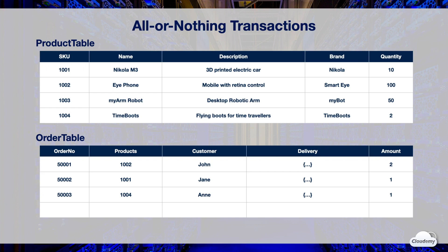An all-or-nothing transaction groups a series of operations together as a single transaction. A transaction succeeds only if all operations succeed, preventing any partial or incomplete updates that can cause data inconsistency.